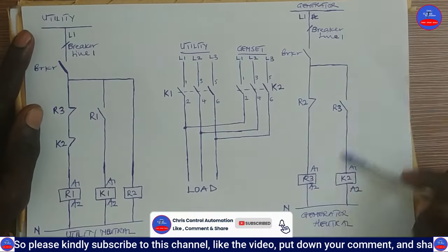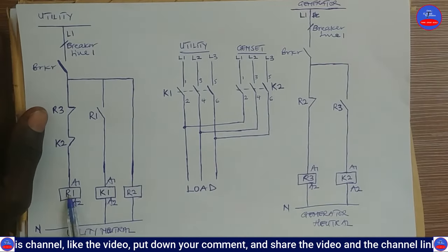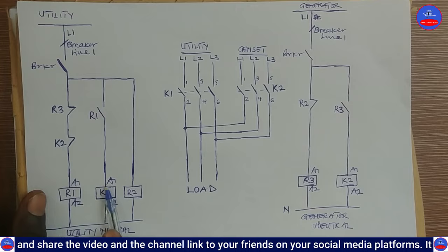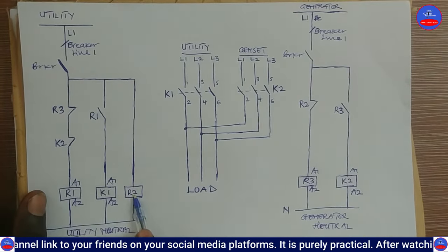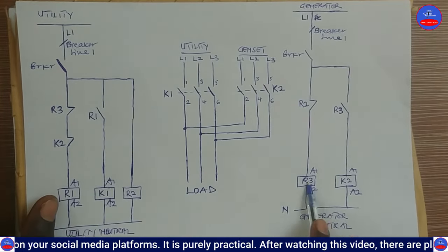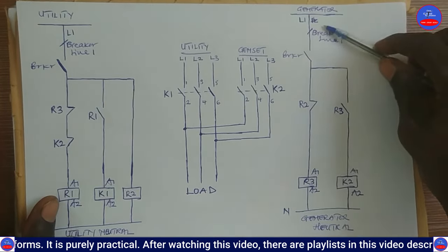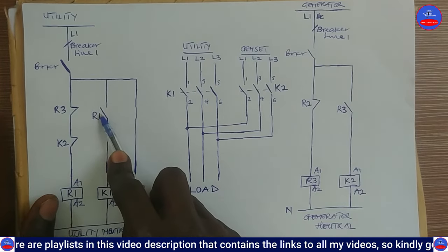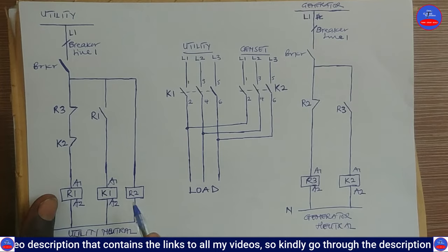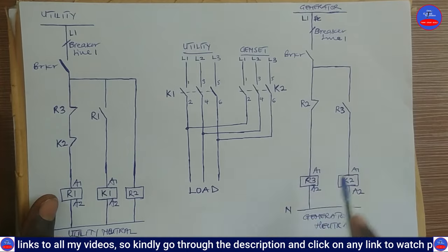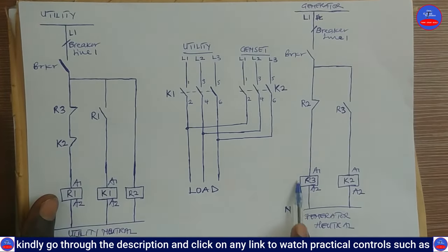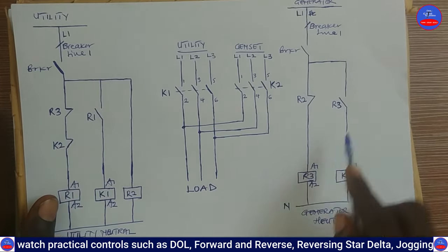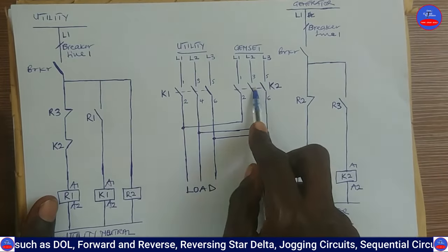This is the control circuit for the utility side and this is the control circuit for the generator side — they are all off right now. These are the relays and contactors. This is the main relay R1 for the utility line, this is the main contactor K1 for the utility side, and R2 is another relay for the same utility side. R3 and K2 are for the generator side. R1's open contact is here, R2's close contact is here, R3's close contact is here, and K2's close contact and R3's open contact are also identified.